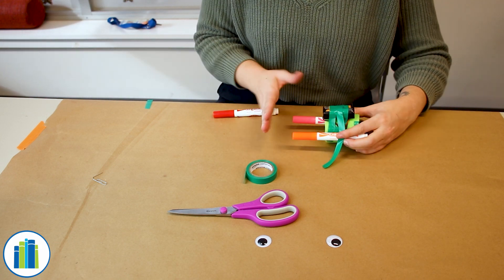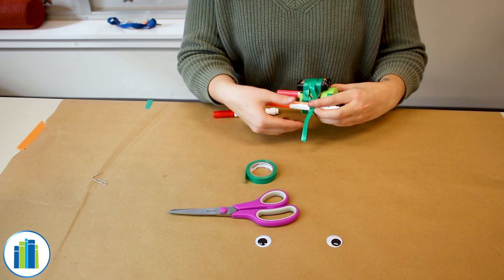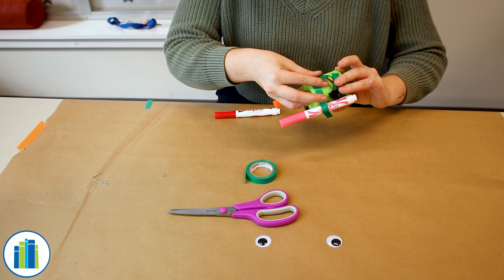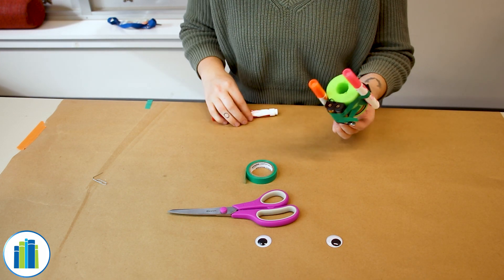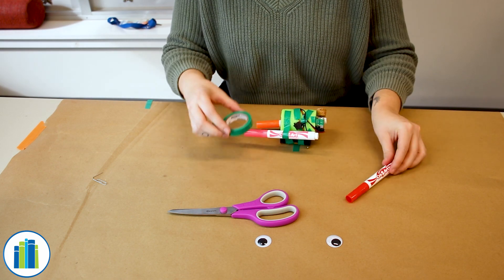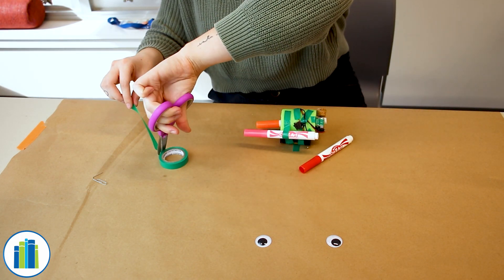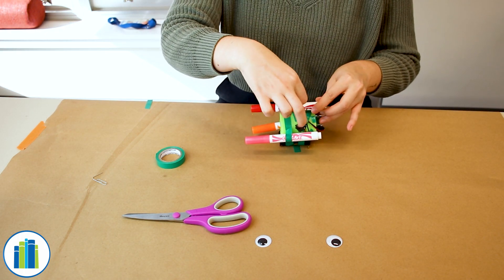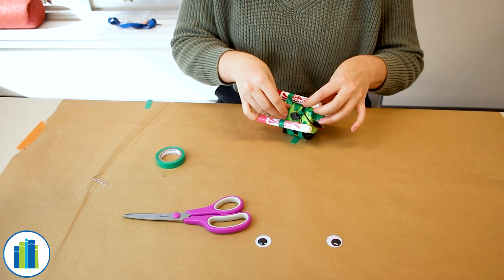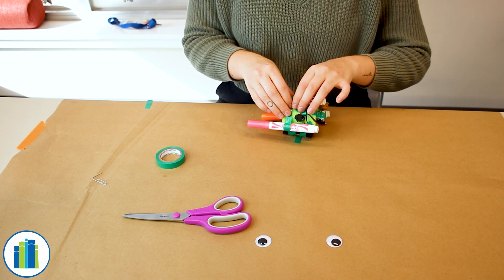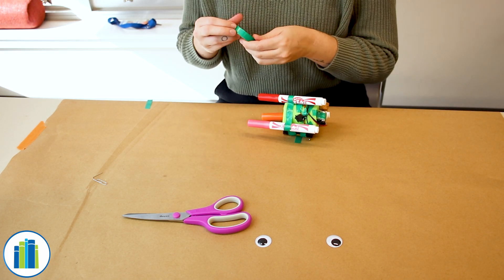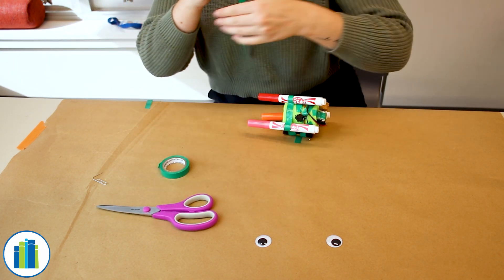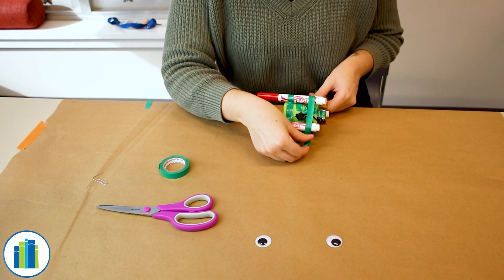Kind of make sure that they're even at the bottom so that they'll be able to stand on the markers. And if you want you can add another layer of tape just to make sure everything's secured on there. Okay, this is what our robot looks like so far.